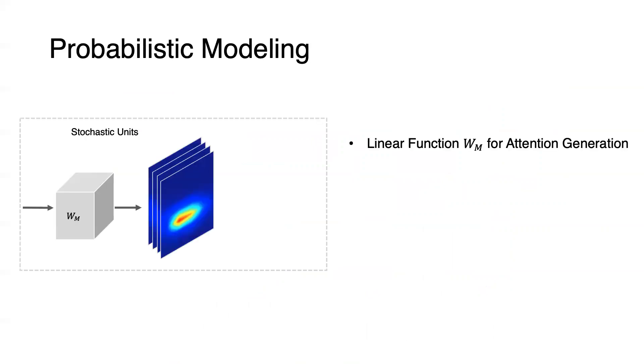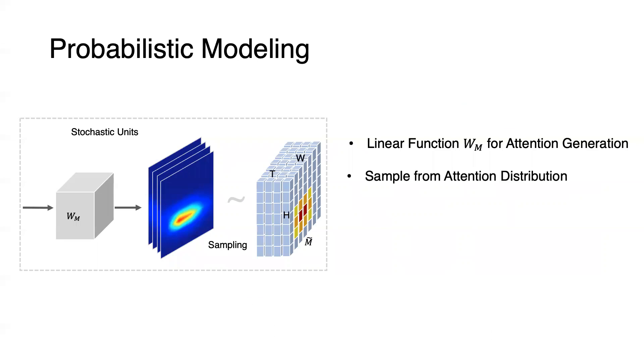We propose a stochastic unit with sampling mechanism to account for the uncertainty of the future representation. We first use a mapping function WM to generate a latent distribution of motor attention from the network feature. This mapping function is composed of a 3D convolutional operation and a softmax function. We then sample from the attention distribution and use sampled attention as a feature indicator for interaction hotspots estimation and action anticipation.